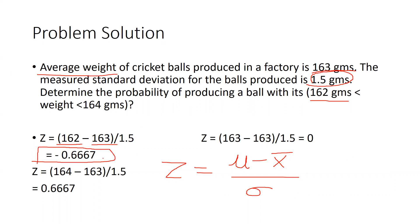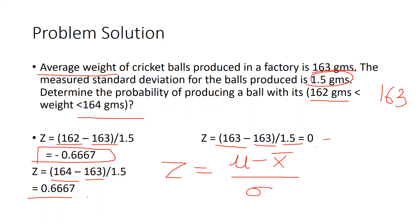When the weight is 163 grams — which is our average weight — z equals 163 minus 163 divided by 1.5, so z equals zero. When we talk about 164 grams, z equals 164 minus 163 divided by 1.5, and the value is positive 0.6667.